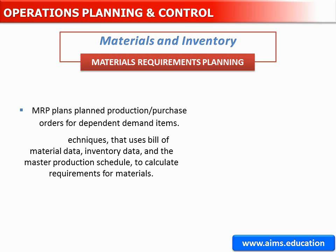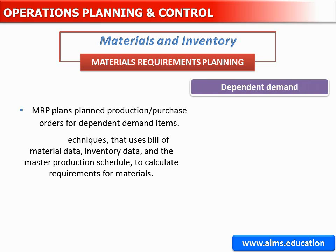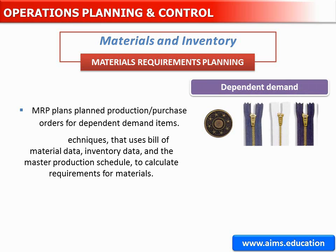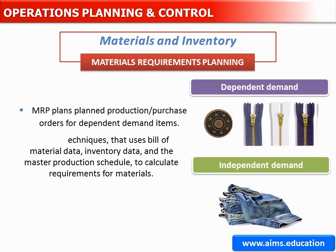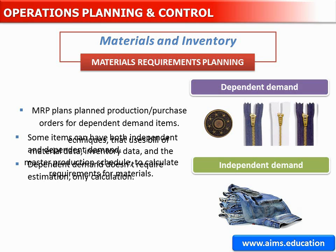While independent demand is the subject of demand forecasts, dependent demand is not. Before you can talk about dependent demand for pockets, zippers, and bolts of denim, there has to be independent consumer demand for pants, or at least a demand plan based on the assumption that there will be demand for those pants. There can, however, be independent and dependent demand for the same item. For example, an item may be used as a component in finished production, but also sold independently as a repair part or upgrade item. Dependent demand does not require estimation, only calculation.